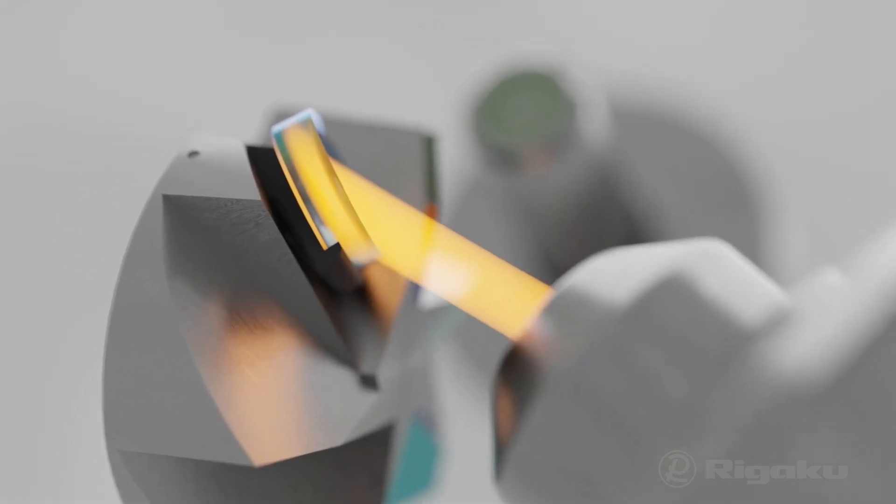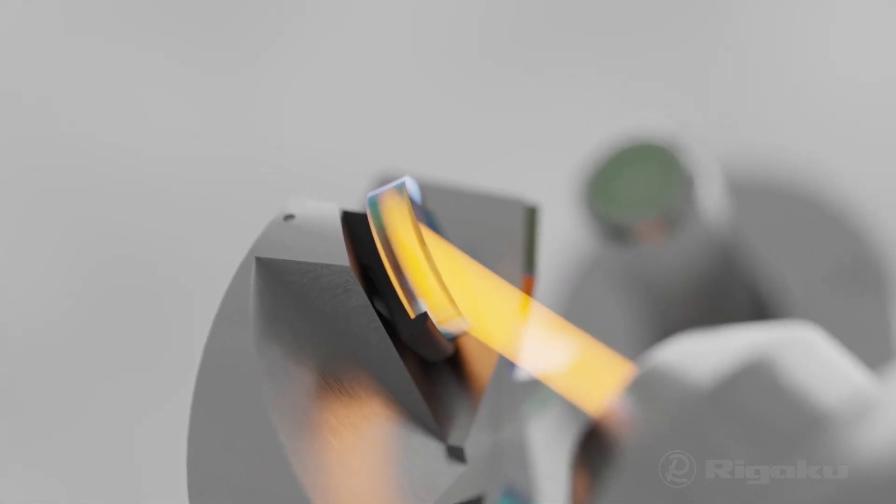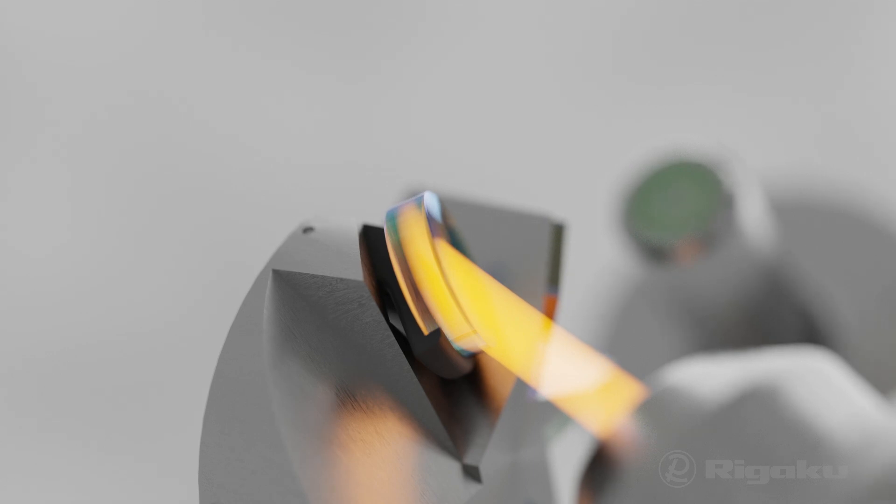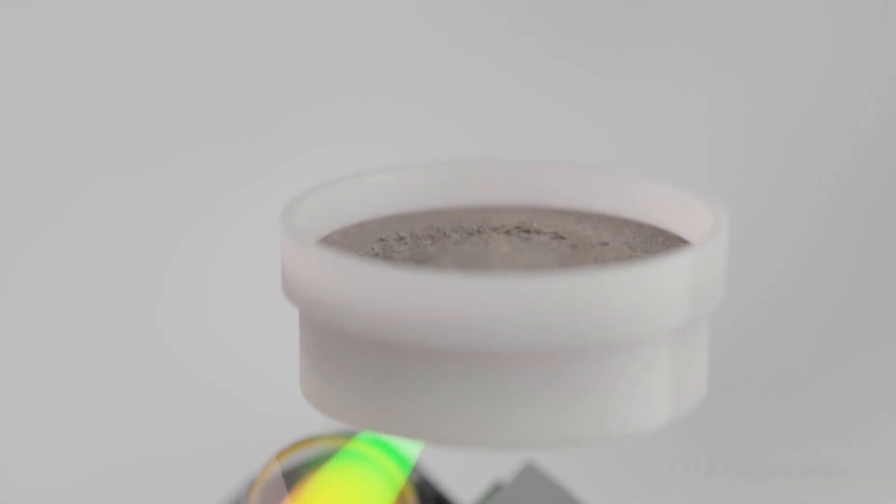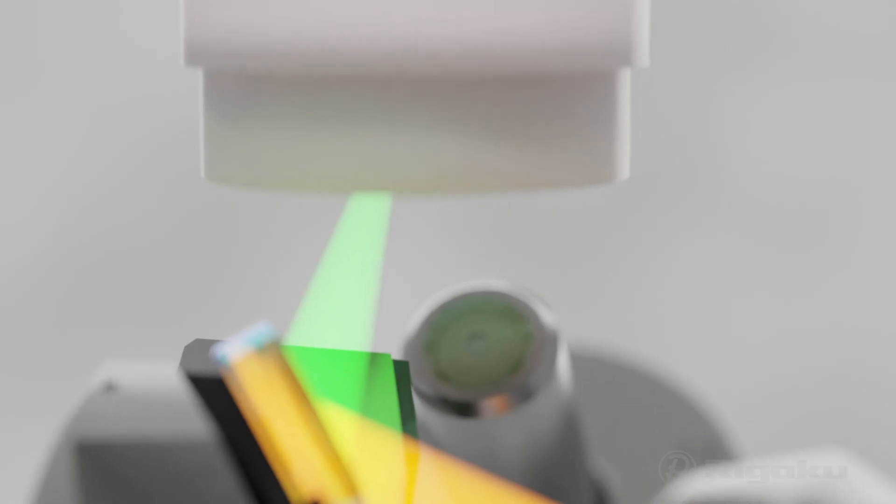Polychromatic X-rays from the tube irradiate the secondary target. The target is excited and fluoresces, emitting monochromatic X-rays to the sample. The detector then records spectra from the sample.